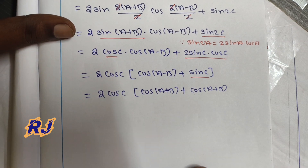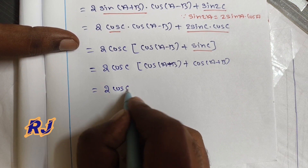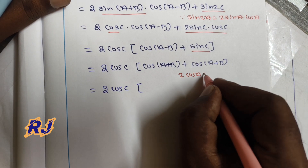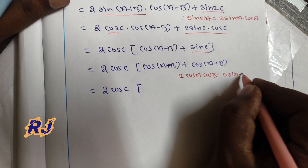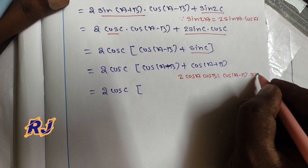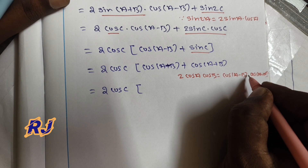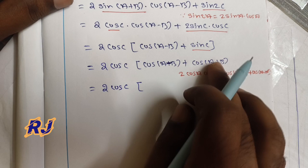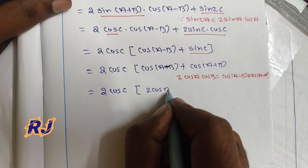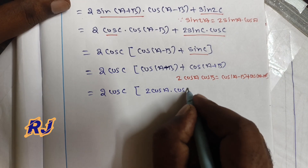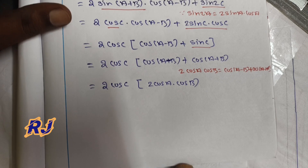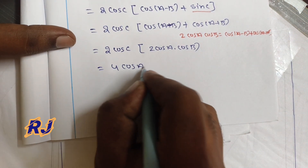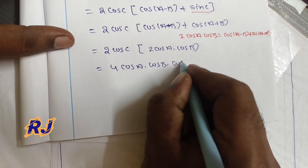Taking 2 cos c common, we get 2 cos c into [cos(a minus b) plus cos(a plus b)]. Applying the formula cos(a-b) plus cos(a+b) equals 2 cos a cos b, this becomes 2 cos c into 2 cos a cos b, which equals 4 cos a into cos b into cos c.